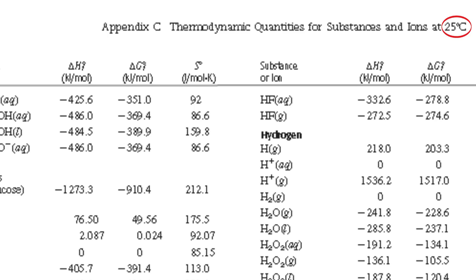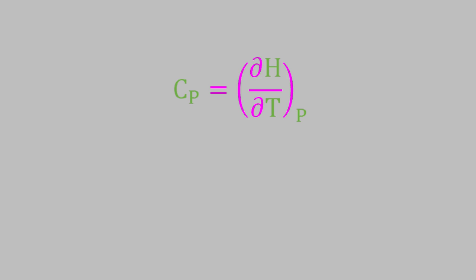As we'll see today, that does make a difference. It turns out that we can account for the difference in temperature if we know the constant pressure heat capacities of all the reactants and products. The constant pressure heat capacity can be expressed as the change in enthalpy as the temperature changes. As we saw in video 17, we can rearrange this equation to get that the change in enthalpy is equal to the integral of the heat capacity with respect to the change in temperature.